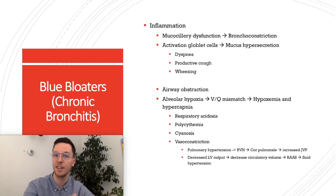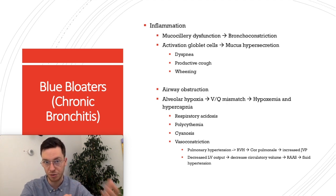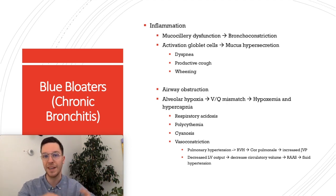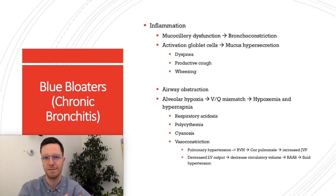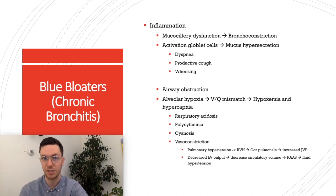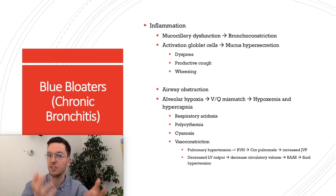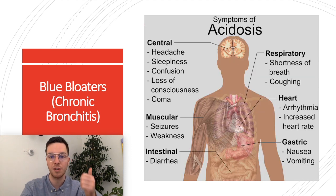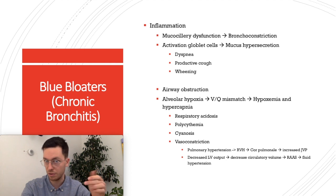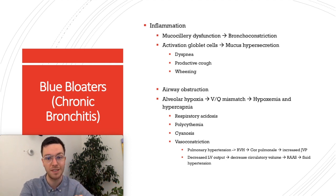In chronic bronchitis, you're mostly dealing with airway obstruction, which makes it difficult for air to be ventilated into your alveoli. This leads to alveolar hypoxia, a VQ mismatch, and eventually to hypoxemia and hypercapnia. This causes all the classical symptoms of a blue bloater: respiratory acidosis, polycythemia, cyanosis — that's why they're called blue bloaters — and vasoconstriction.